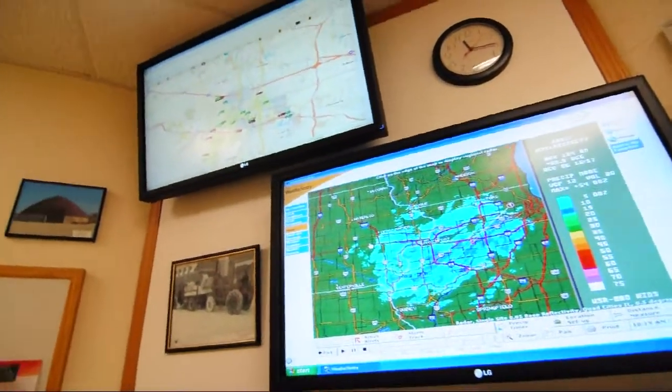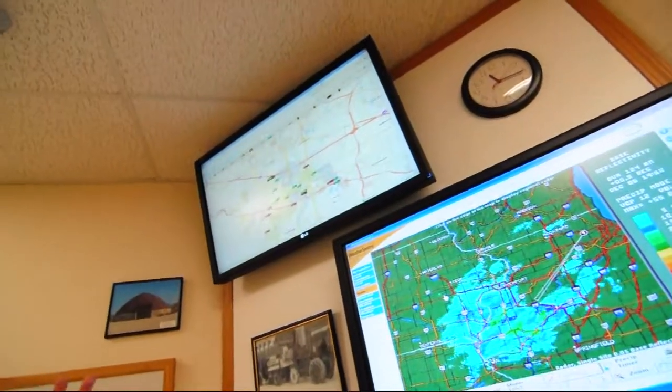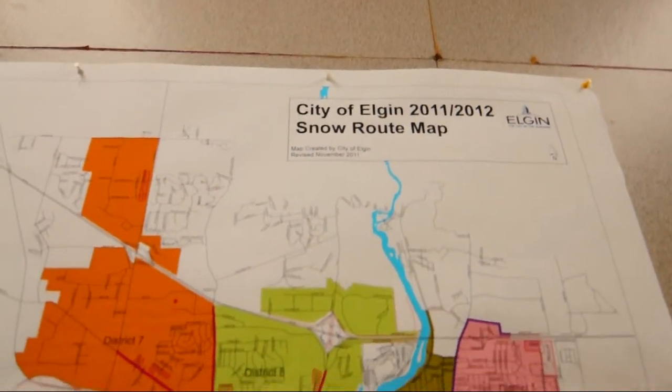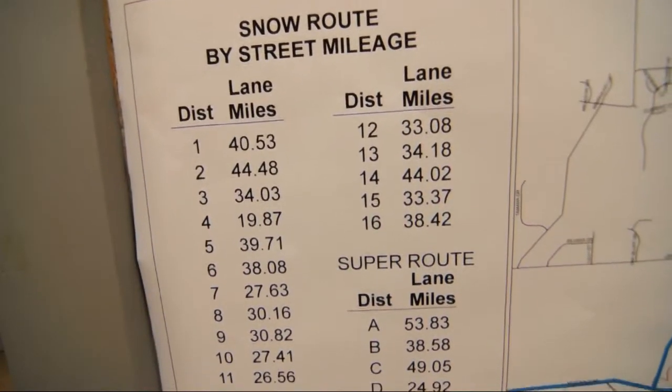And then on the top is a module called Interfleet, which is a GPS tracking device that we can see all of the various snowplow trucks as they're driving throughout the community.